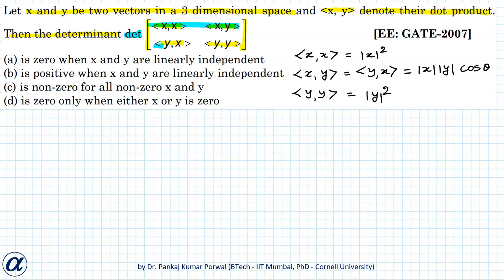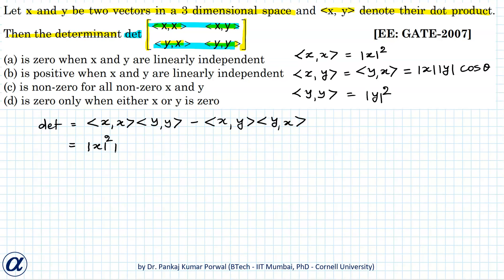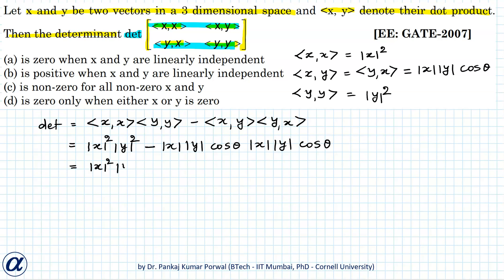The determinant of this matrix can be written as magnitude of x squared times magnitude of y squared minus magnitude of x times magnitude of y times cos θ, all squared — which equals magnitude of x squared times magnitude of y squared, with the factor (1 minus cos squared theta) taken out.